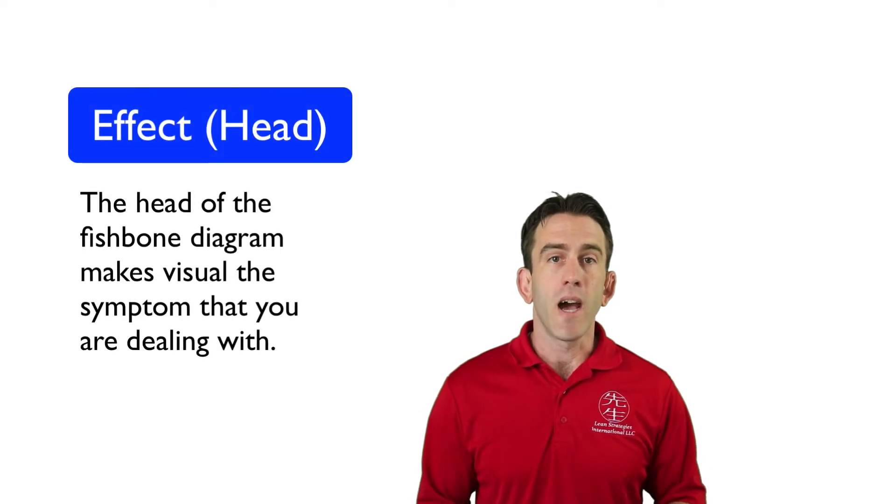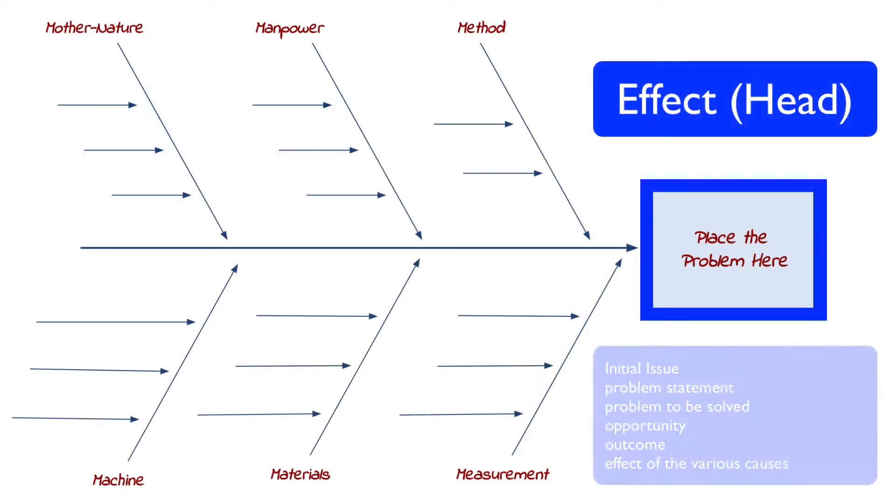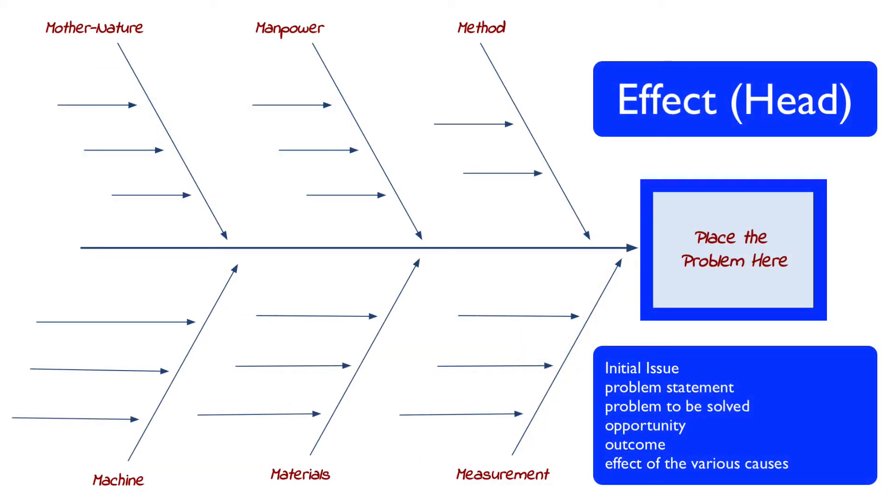The head of the Fishbone Diagram makes visual the symptoms that you are dealing with. This is usually the initial issue that is seen. It may also contain a problem statement, problem to be solved, opportunity, outcome, or the effect of various causes.